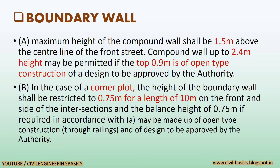The second requirement of boundary wall is: in the case of a corner plot, the height of the boundary wall shall be restricted to 0.75 meter for a length of 10 meter on the front and side of the intersections. The balance height of 0.75 meter, if required in accordance with the first requirement, may be made up of open type construction through railings, of a design to be approved by the authority.